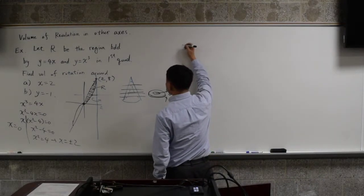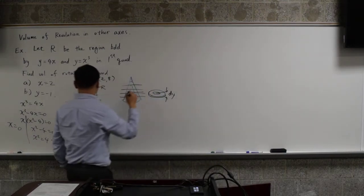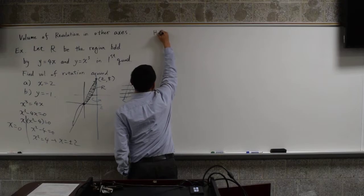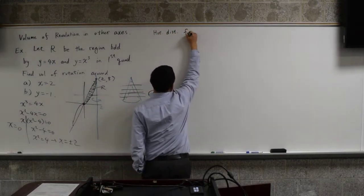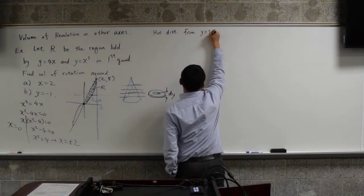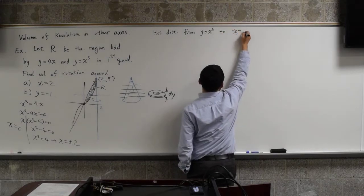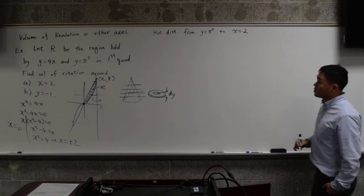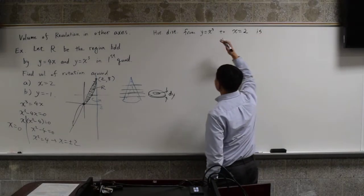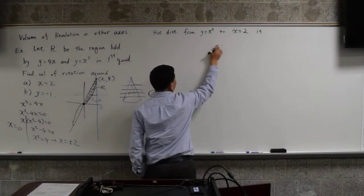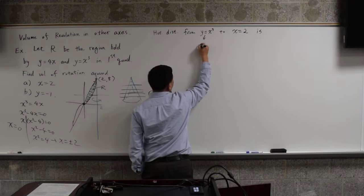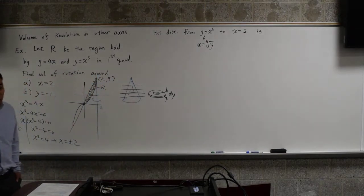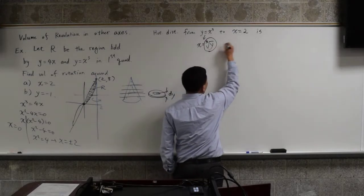So let's try that first. We want to find the horizontal distance from y equals x cubed to x equals 2. Since you need the x coordinates, you have to solve both of them for x. This is already solved for x, so we first have to solve this for x. It gives you x equals cube root of y, just by taking the cube root of both sides. And you're basically taking the difference between the two.